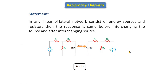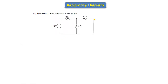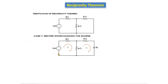Now we will take one example and verify the reciprocity theorem. The circuit consists of two loops, one voltage source, and three resistors. Case one is before interchanging the source — we observe the response in this branch. In loop one, current I1 is flowing, and in loop two, current I2 is flowing, both in the clockwise direction.